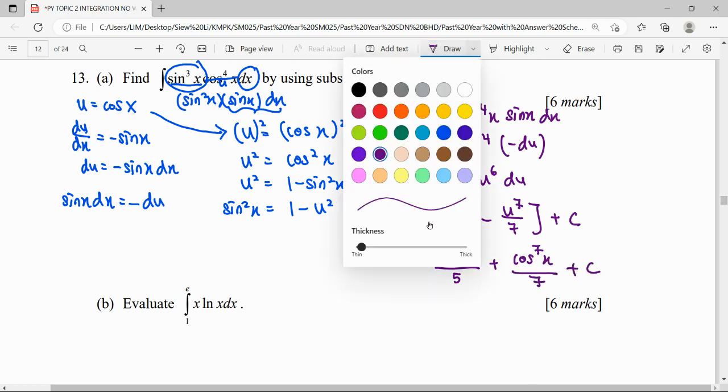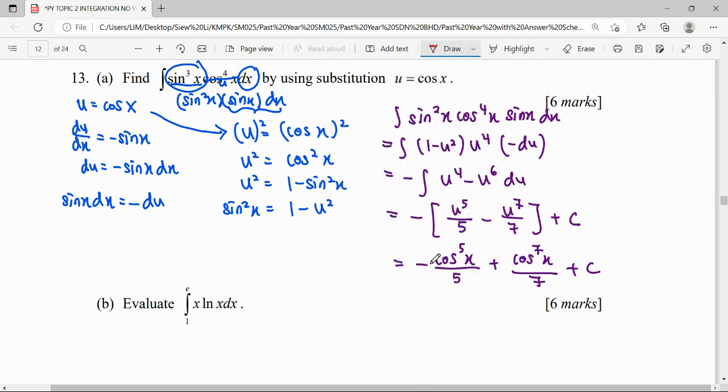For these six marks, the first thing given that u equals cos x, when we differentiate it we get the negative. Then we manage to express sin x dx is equal to negative du. Then we rewrite our new form. This is our new form in term of u where every term must be correct. Then we simplify by expanding the bracket, starting integration, and substitute back the u in term of cos x.